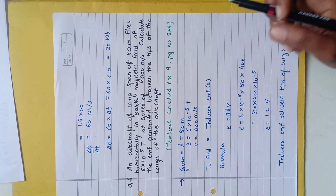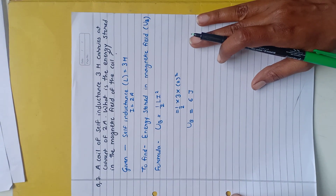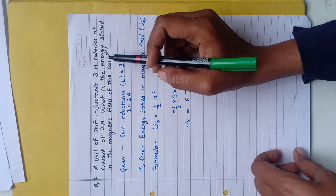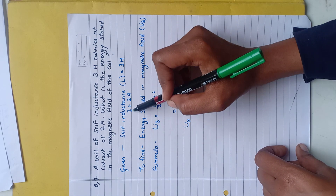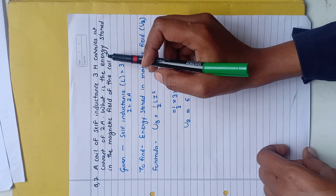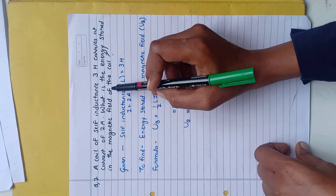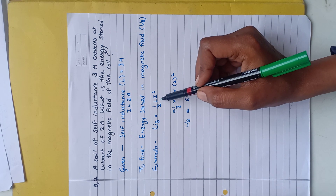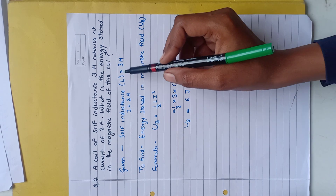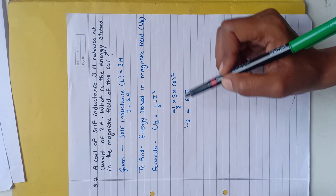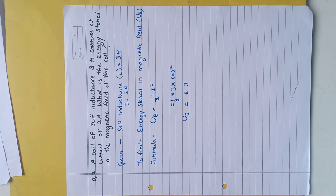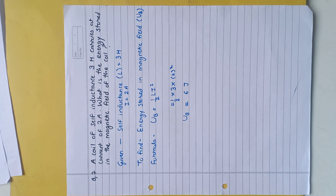This is textbook unsolved example number 9, page 286. The last question is a numerical: a coil of self-inductance 3 henry carries a current of 2 ampere. What is the energy stored in the magnetic field? Energy stored is UB = ½LI² = ½ × 3 × 2² = ½ × 3 × 4. The halves cancel, giving UB = 6 joule. So 6 joules of energy is stored in the magnetic field.